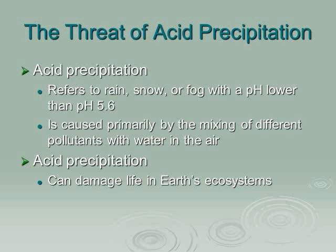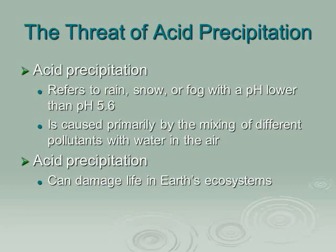Acid precipitation has been a notable issue over the past 10 to 20 years. It refers to any form of precipitation — rain, snow, or fog — with an exceptionally low pH, lower than about 5.6, making it extremely acidic. Since most living organisms require a pH around seven, this has caused major problems in ponds and forests, particularly in the northeast. As we pollute the environment and put more pollutants into the air, precipitation becomes more acidic, damaging ecosystems.